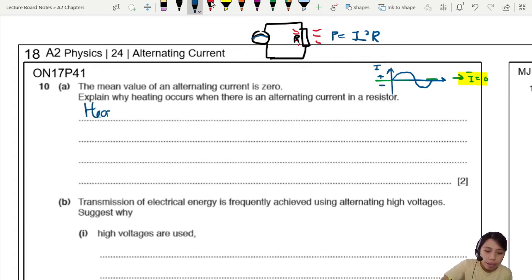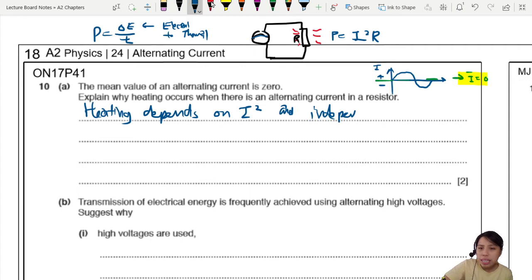So at every point in time, no matter you got positive or negative current, you will still have power for this resistor. So there's always going to be energy transfer by the resistor. So we must talk about that. So we can say heating depends... Heating is energy transfer, thermal energy converted. Power is energy converted per unit time. And the energy converted here is from electrical to thermal energy, which is heat. So heating depends on I square because P equals I square R. And don't care which direction. So I must also mention, independent of direction.